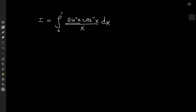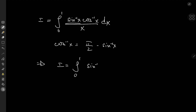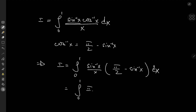We'll begin by invoking the relationship arccos(x) = π/2 − arcsin(x), which means the integral I can be expanded as the integral from 0 to 1 of arcsin(x)/x times (π/2 − arcsin(x)) dx. We simplify the integrand as π/2 times arcsin(x)/x minus arcsin²(x)/x dx.